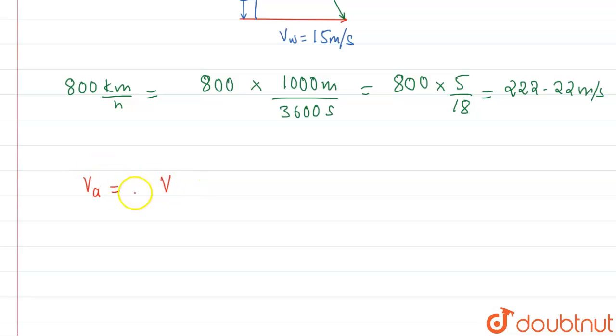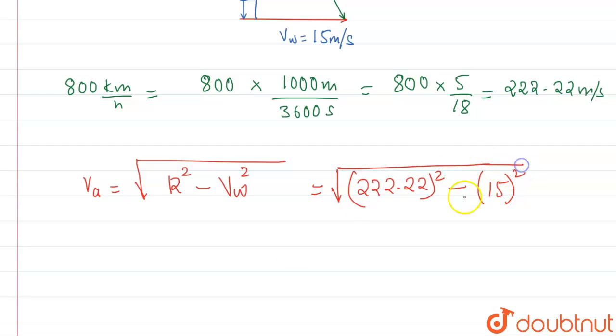Basically this is just the magnitude we'll find. Velocity of under root of velocity of the resultant velocity basically. So resultant square plus velocity of wind, and this will become minus, not plus. So what we'll have? We'll have under root of 222.22 squared minus velocity of wind, which is 15 meter per second squared.